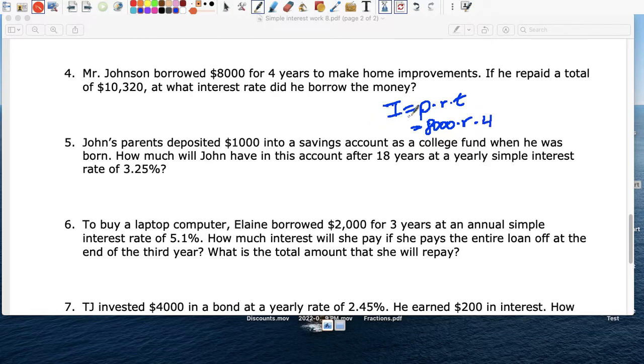The T is four years. Now, how much in extra did he have to pay? So in this case, when he paid everything back, he paid a total of $10,320. So if you subtract this, you get $2,320.